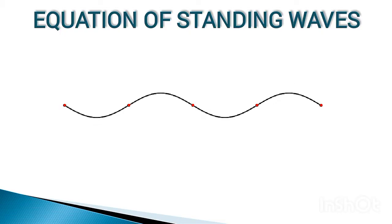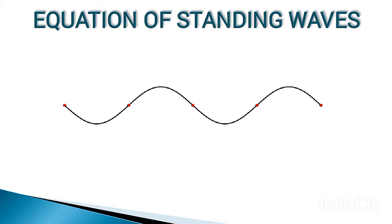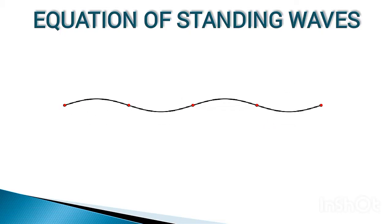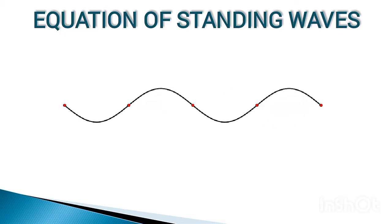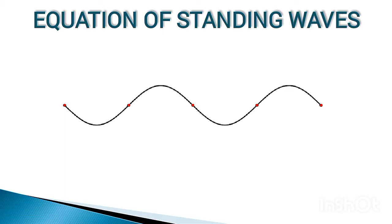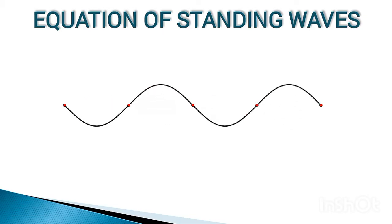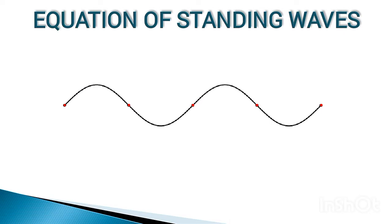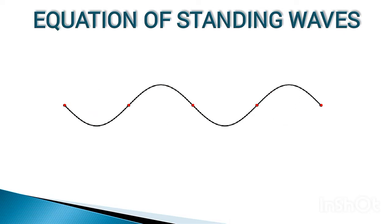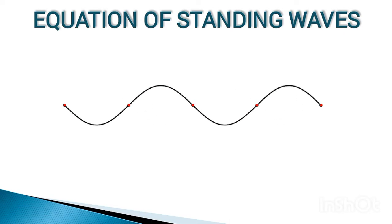Here you can see a standing wave. It does not travel from one point of a medium to another like a progressive wave, but oscillates in a fixed region of the medium with varying amplitude. It is also known as a stationary wave.